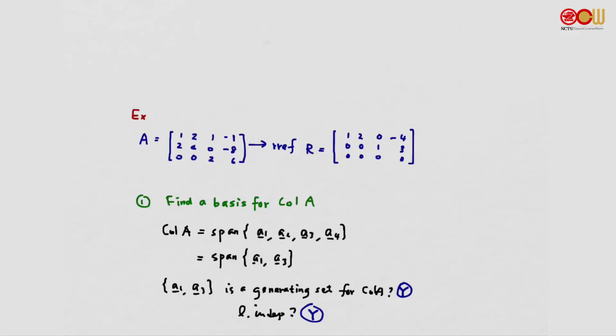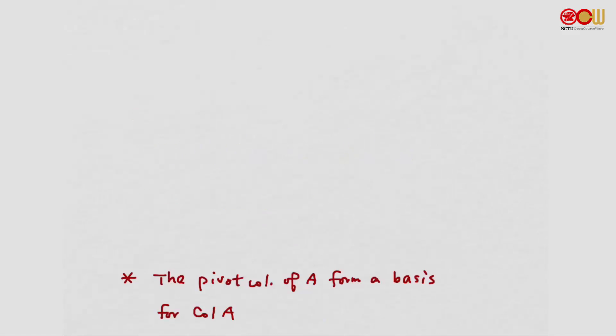We found a basis for the column space, row space, and null space of this particular A. We can now make a more general conclusion. If we want to find a basis for the column space of A, the pivot columns always form a generating set, and the pivot columns are always linearly independent, so the pivot columns of A form a basis for the column space of A.